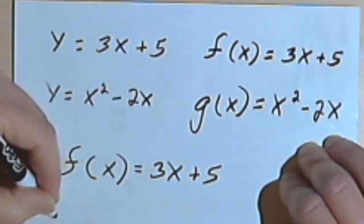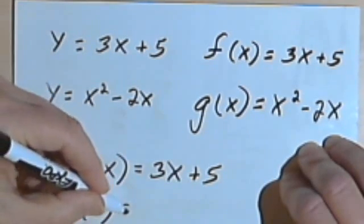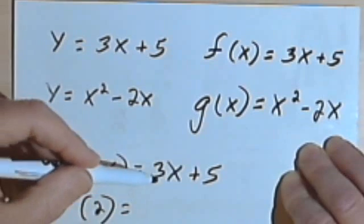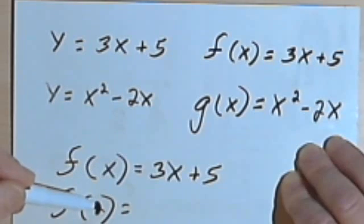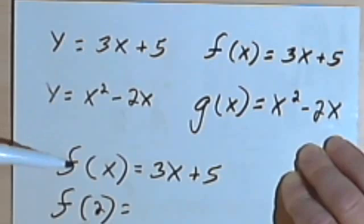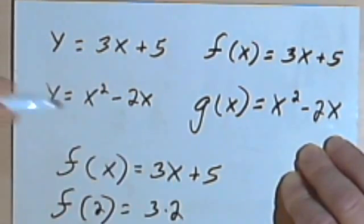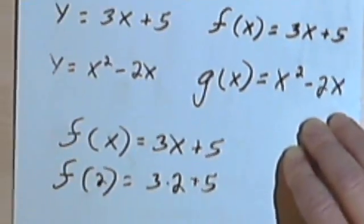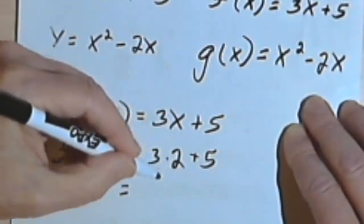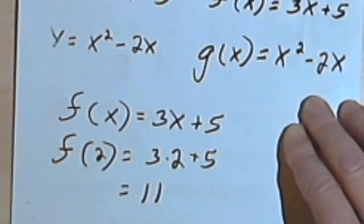So if I write f of 2, then what that means is I'm going to find out what 3x plus 5 is when instead of having an x, I have a 2. So all I'll do is put that 2 in wherever I have an x on the right side of my function. So that's going to be 3 times 2 plus 5. And then, of course, when I multiply that out, I'll have 3 times 2 is 6, and 6 plus 5 is 11.